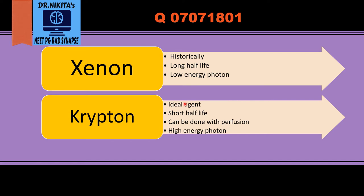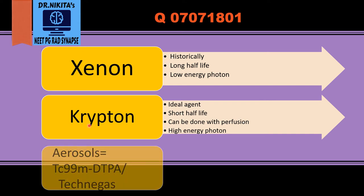Next is krypton. Krypton is the ideal agent — it is the only gas agent with which we can do a VP SPECT scan. It has a short half-life, so we can administer it continuously. It also has high energy photons, which makes it easy to get good images. Ventilation and perfusion scintigraphy can be done simultaneously with krypton.